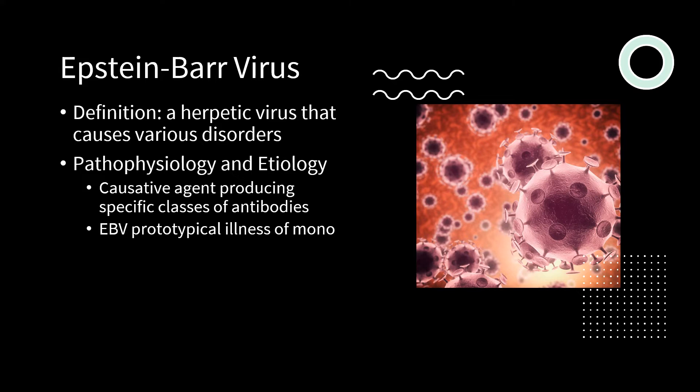Epstein-Barr is a herpesvirus with double-stranded DNA enclosed by proteins. It targets B cells, causing them to differentiate into memory B cells that can move into the circulatory system or remain latent until triggered. Transmission occurs through deep kissing or food sharing. Increased levels of viral DNA are found in salivary secretions after initial infection, and children can be infected by eating food chewed by an Epstein-Barr infected individual.